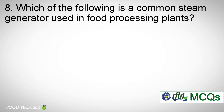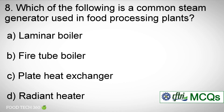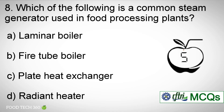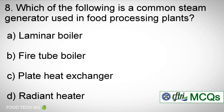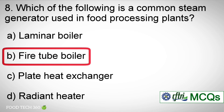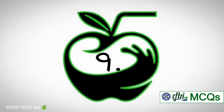Question number 8: Which of the following is a common steam generator used in food processing plants? A. Laminar boiler. B. Fire tube boiler. C. Plate heat exchanger. D. Radiant heater. Correct answer: B — Fire tube boiler.